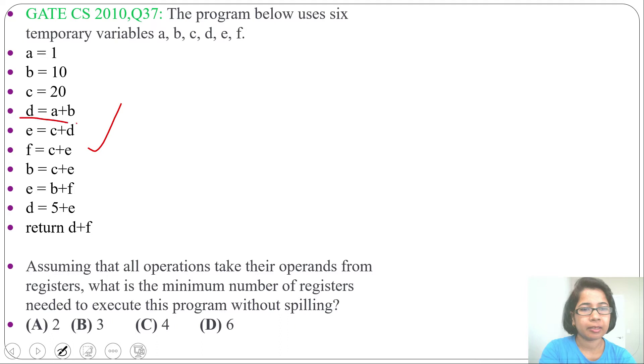For that we need to create expression tree for this instruction. We will start from this statement D equal to A plus B. We will create one node for A, another node for B, another node for plus. For plus left child will be A, right child will be B. And we will add D for plus. Next we will do for C plus D. D is already there. We will create another node for C, another node for plus. For plus C will be its left child while D will be its right child. And this plus node is for E.